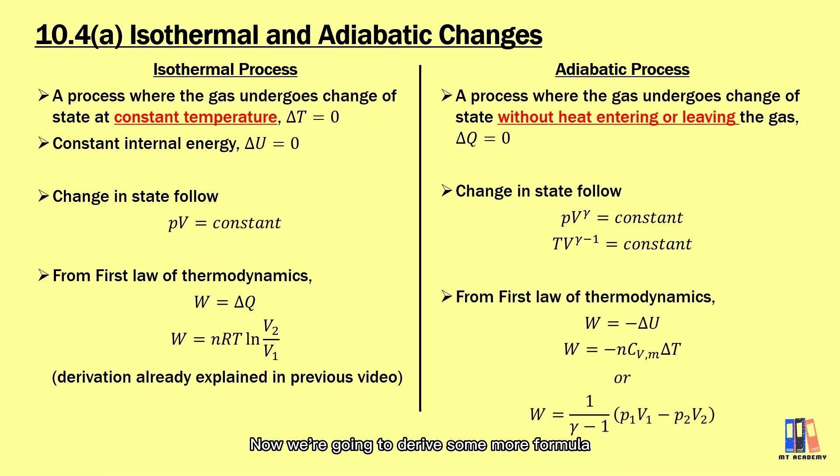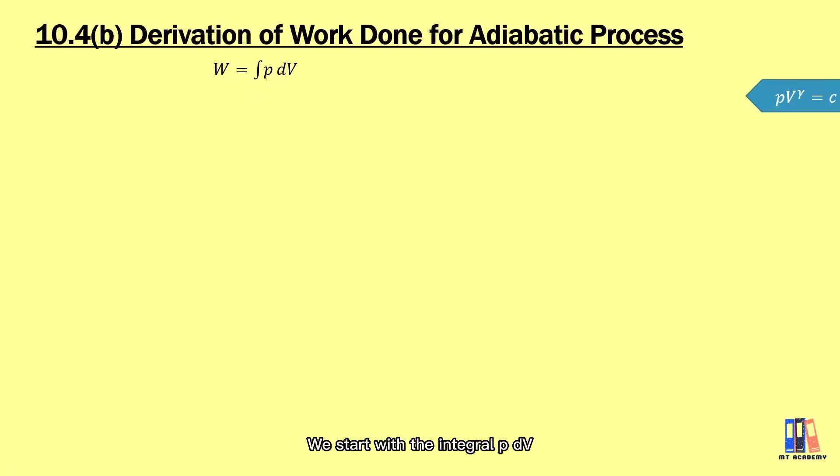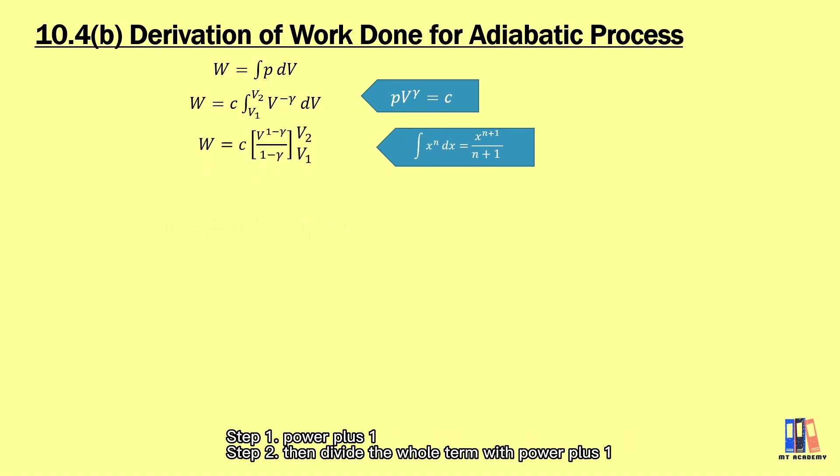Now we're going to derive some more formula for the equation of work done during adiabatic process. We start with the integral of PdV where we could substitute P as the constant C divided by the volume to the power of negative gamma. Here is just normal integration which you have learned in math. Power plus one then divide the whole term with power plus one and then we do the substitution of V2 and V1.